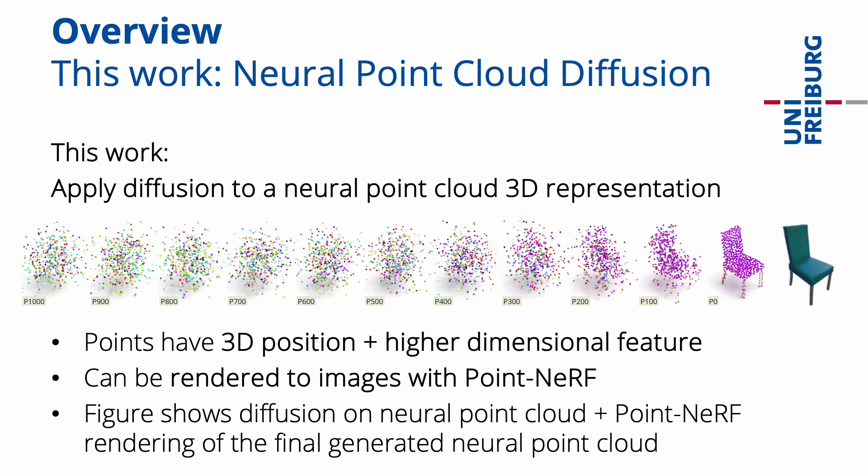It represents the shape and appearance of objects by a point cloud, where each point has a 3D position and a higher dimensional feature. It can be rendered to images with a point NeRF formulation. The figure shows the diffusion process on this representation and the point NeRF rendering of the final generated neural point cloud.